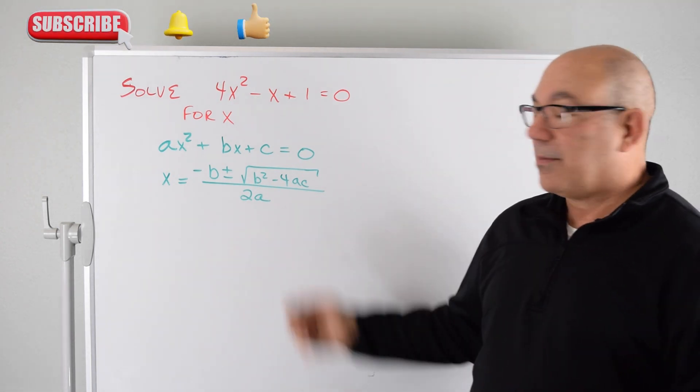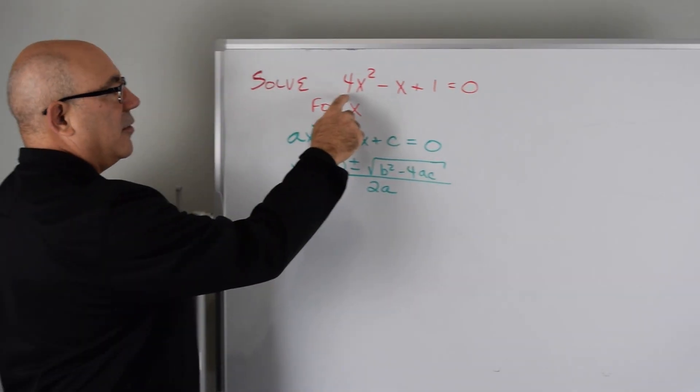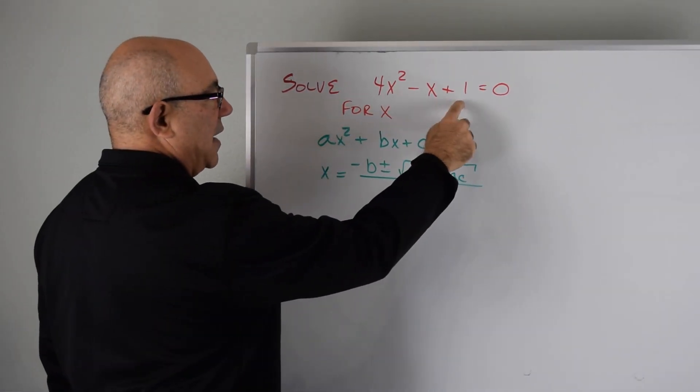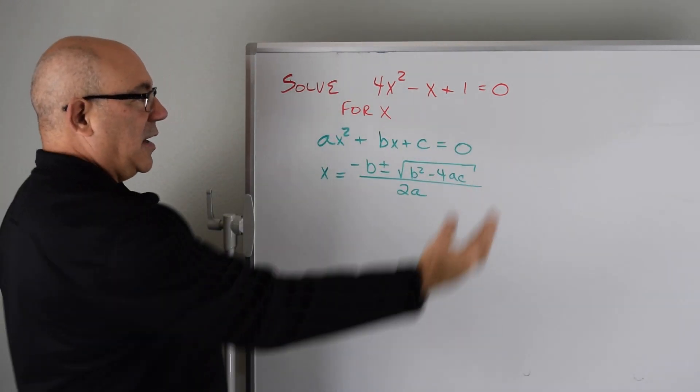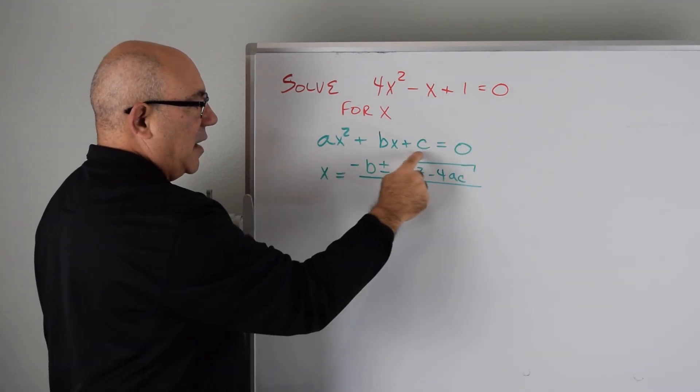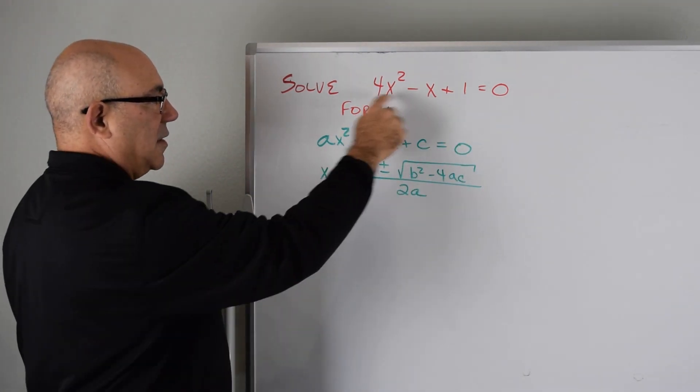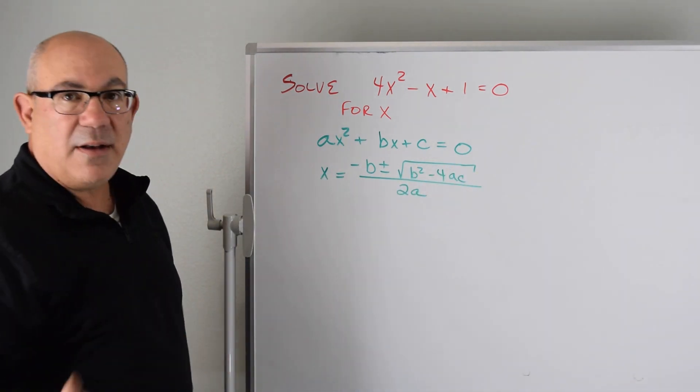So let's jump into the problem. We have a quadratic in the form of 4x² - x + 1 = 0. When you solve a quadratic, you try to get everything on one side, set it equal to 0, and then you can assign the coefficients. Once you assign the coefficients, you can plug them into the quadratic formula and you're off and running.